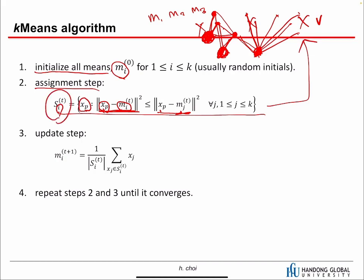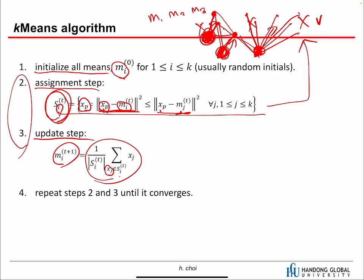Now we have an assignment. It's not perfect, but we will update it later after updating the mean vectors. In the third step, we update the mean vector. Based on the assignment from the second step, we now know which samples belong to which clusters, and we calculate the average to update the mean vectors. The initial vectors move to new positions. Then we repeat steps two and three until it converges. This is the k-means algorithm.